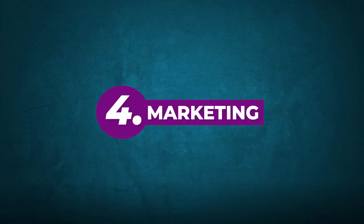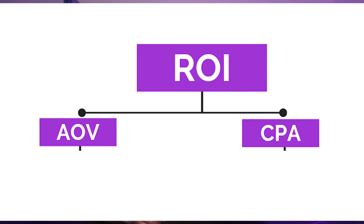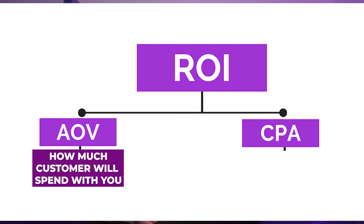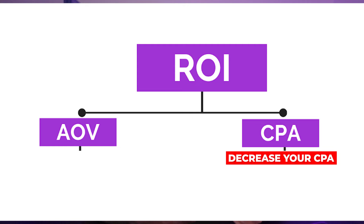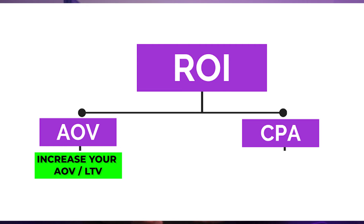Now that you've got manufacturing, inventory management, and shipping and logistics on lockdown, it's time to look at one of your biggest ongoing expenses — number four, marketing. Before diving in, it's important to understand some key concepts. If you're doing any kind of marketing for a Shopify store, the ROI you get depends on how much a customer will spend with you — your AOV or LTV — and how much it costs to get customers to spend that much — your cost per acquisition. Decrease your CPA, ROI will increase. Increase your AOV or LTV, ROI will increase.